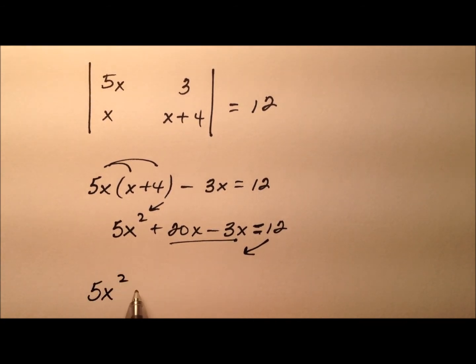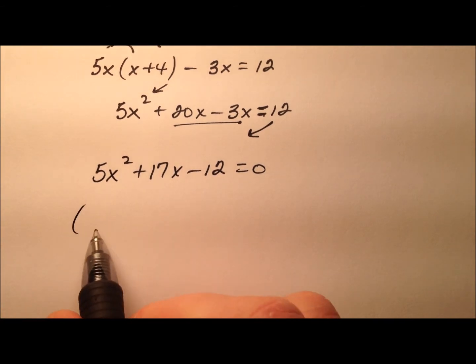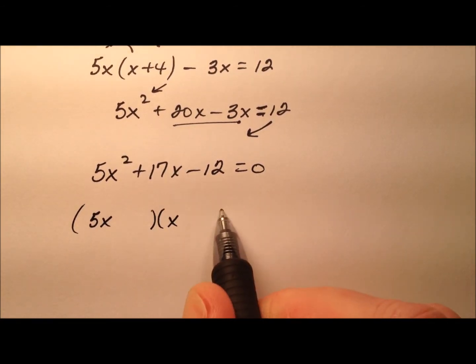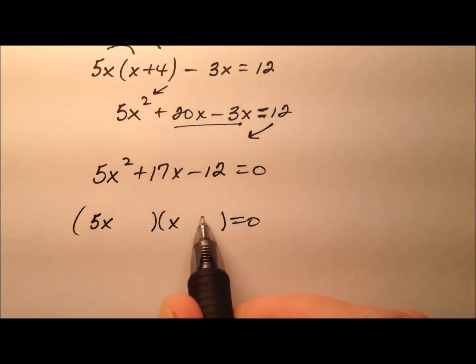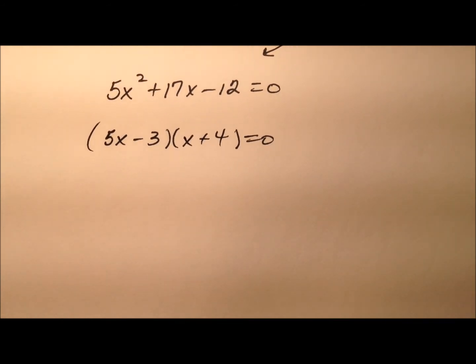So 5x squared plus 17x minus 12 equals 0 and we can factor this nicely, let's see, it should be 5x here and an x here and we'll go a 4 and a 3, a minus and a plus. Okay, so we have this factored now.